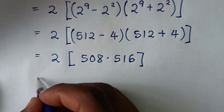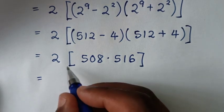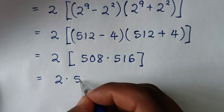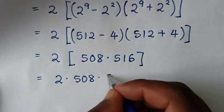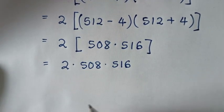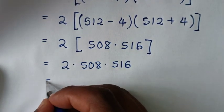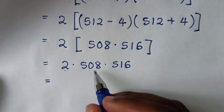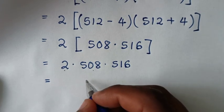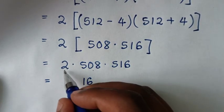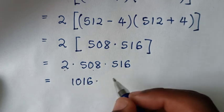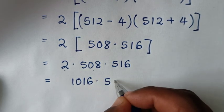Then in the next step it will be equal to: we will open this bracket, so it will be 2 times 508 times 516. So here it will be equal to: we will multiply this times this, so 2 times 508 is 1016, times 516.